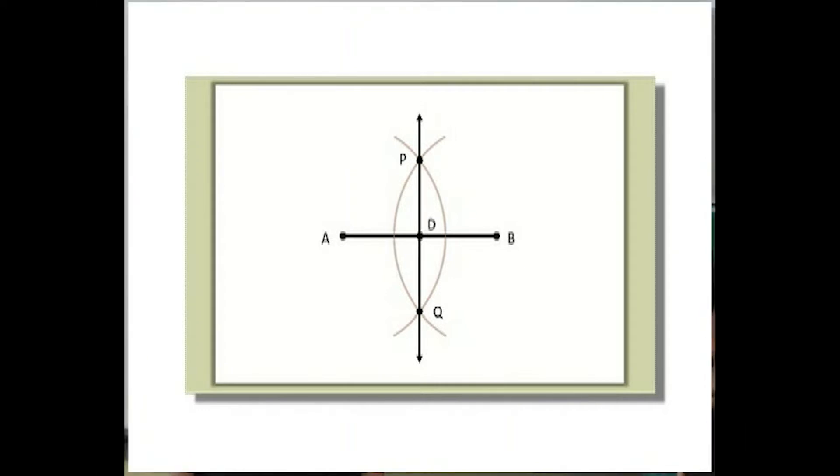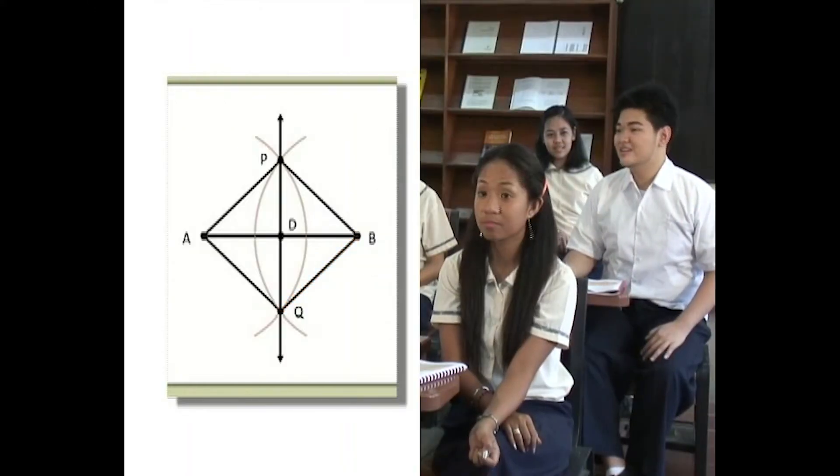Let's now construct triangles PAB and QAB. Are the lengths of the segment AB, PB, QA, and QB the same? Yes, they are.